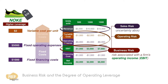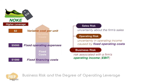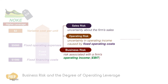Sales risk is the uncertainty about the firm's sales, and operating risk is the uncertainty in operating income caused by fixed operating costs. As we've learned in the last lesson, leverage is the amount of fixed costs a firm has. So the greater the degree of leverage, the greater is a firm's operating risk.